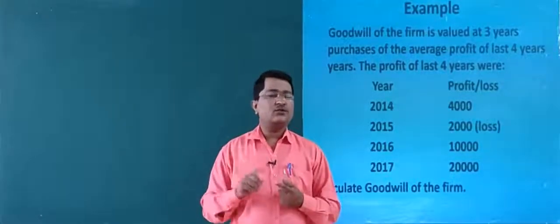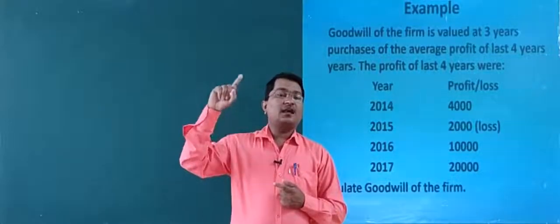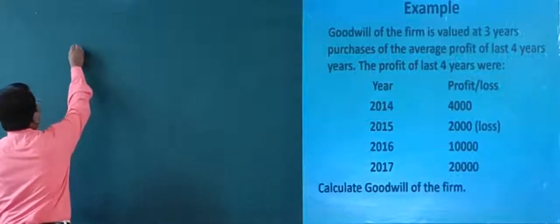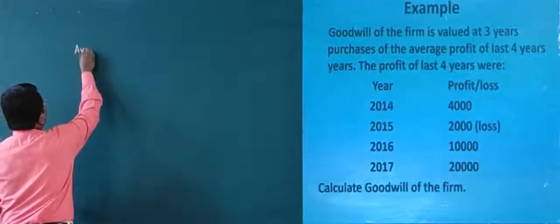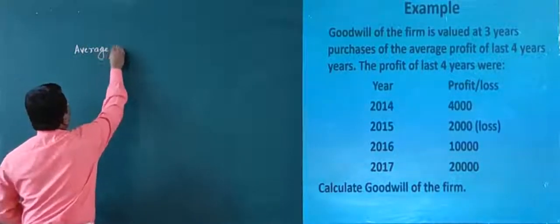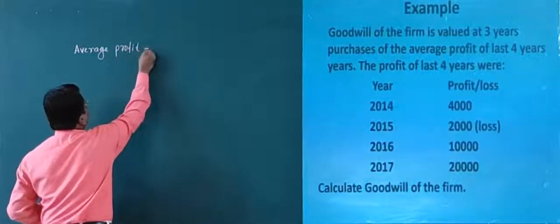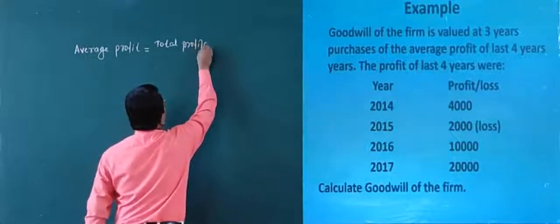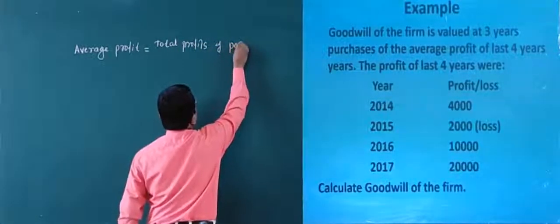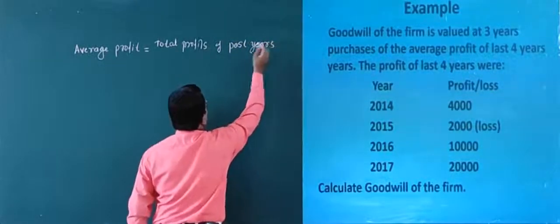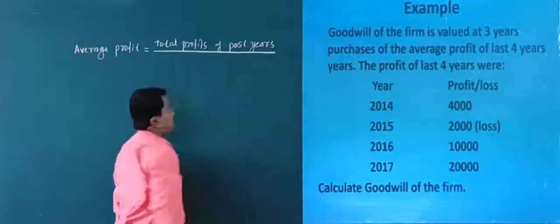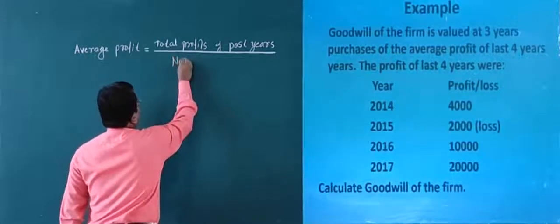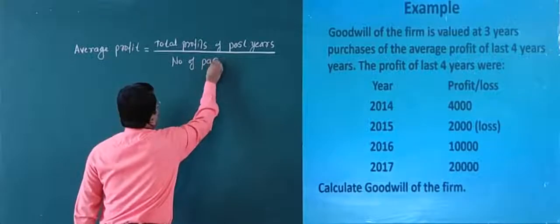Average profit is equal to total profits of past years divided by number of past years.